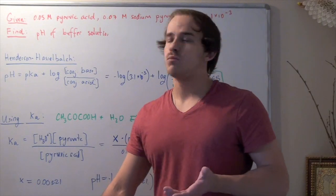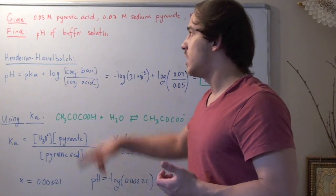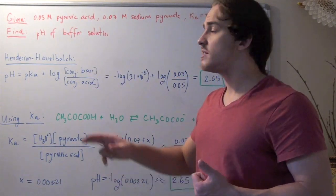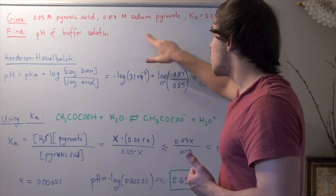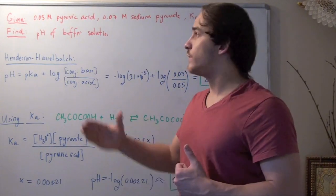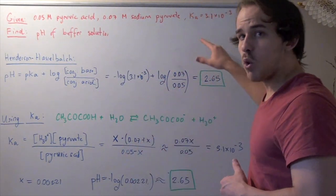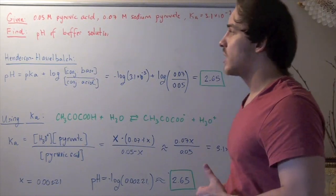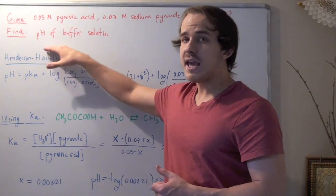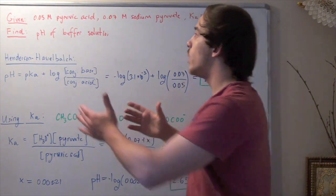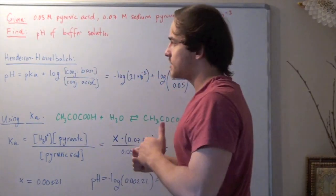In this example, we begin with 0.05 molar pyruvic acid and 0.07 molar sodium pyruvate. Our Ka is 3.1 times 10 to the negative 3. We want to find the pH of our buffer solution once we mix these two.